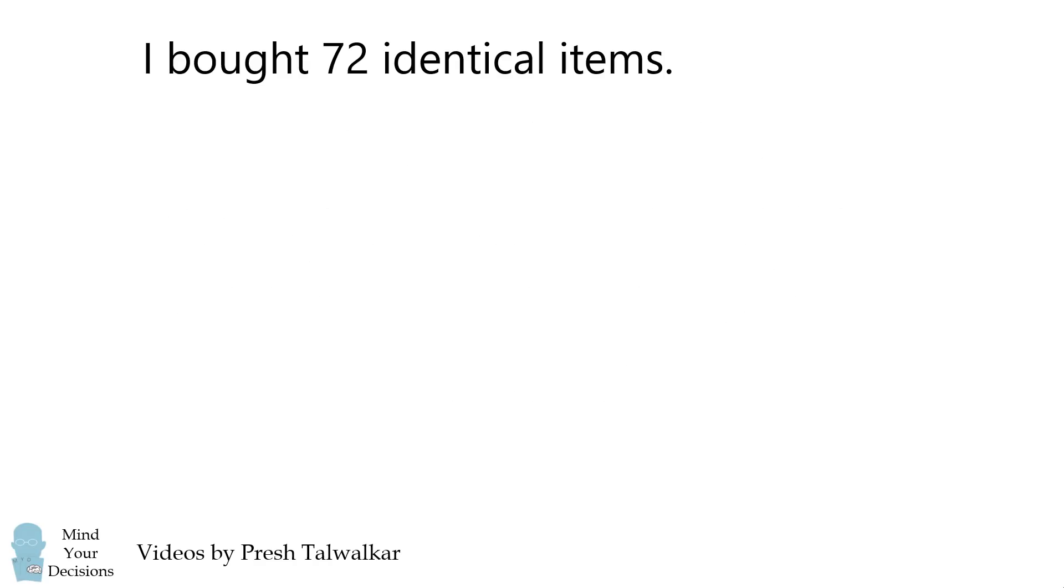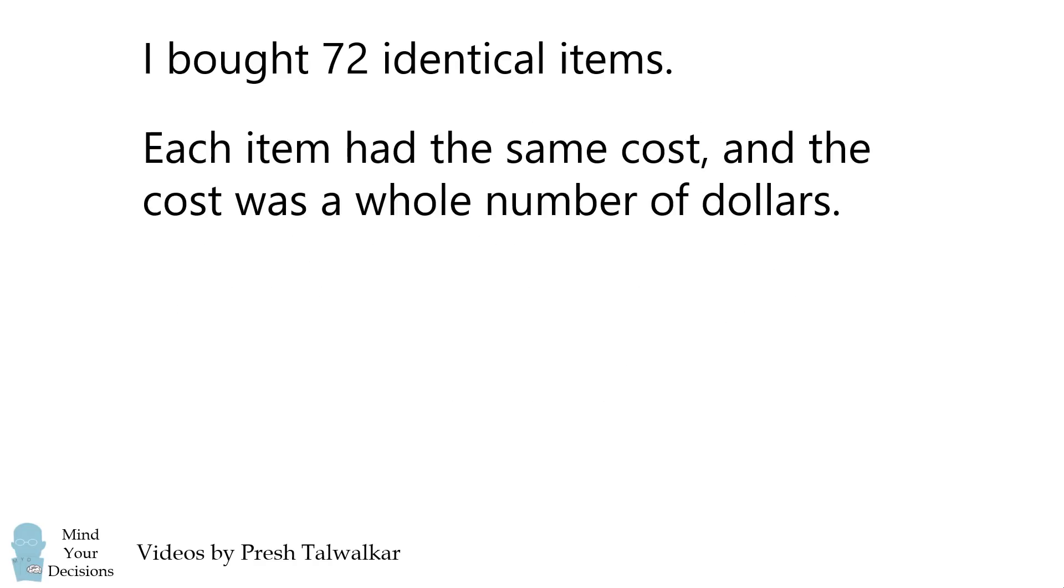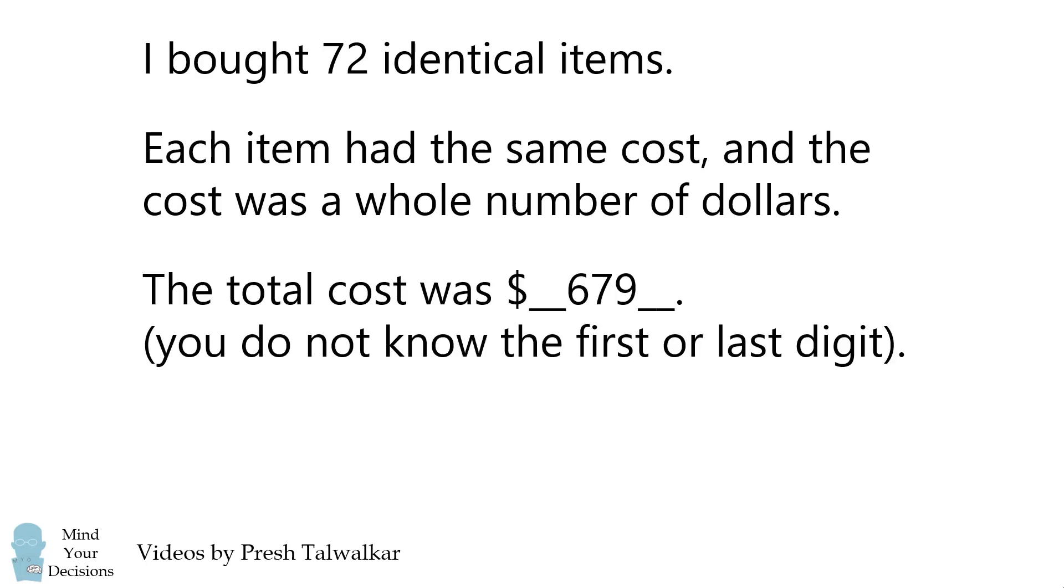I bought 72 identical items. Each item had the same cost, and the cost was a whole number of dollars. The total cost was a five-digit number. You don't know the first or last digit, but the middle three digits are 6, 7, and 9. How much did each item cost?